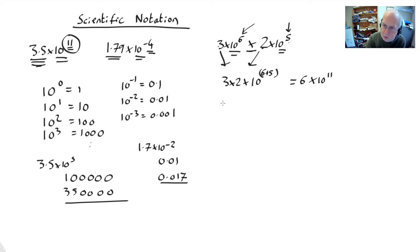If you divide, let's say we want 3 by 10 to the 6 divided by 2 by 10 to the 5. So you take the numbers out the front and divide them. So that's 3 over 2. And you now subtract the indexes. That's going to be 10 to the 6 minus 5. So that's going to be 3 over 2 is 1.5 times 10, 6 minus 5 is 1, which is just going to be 15.